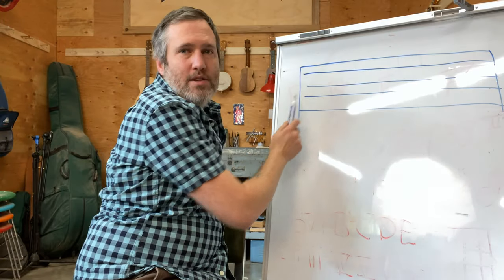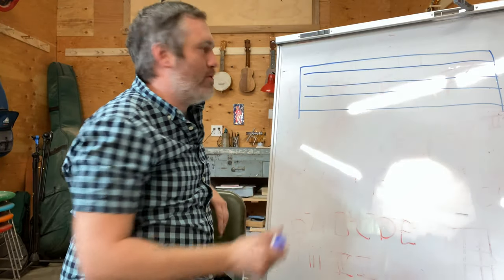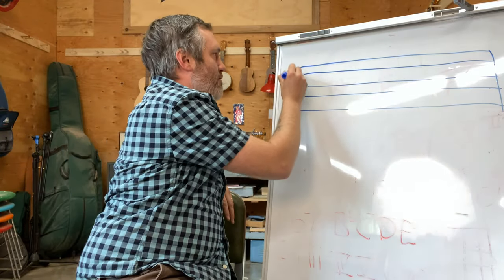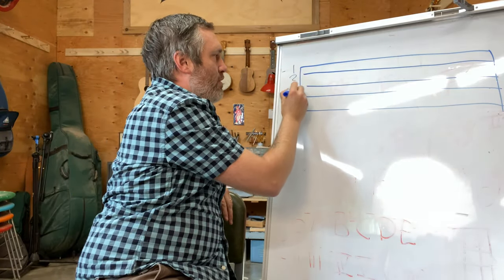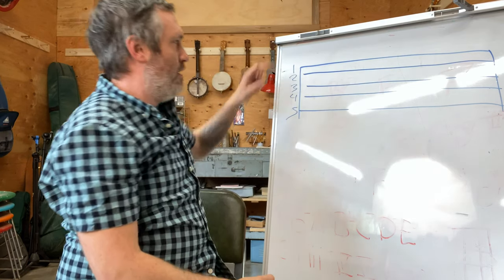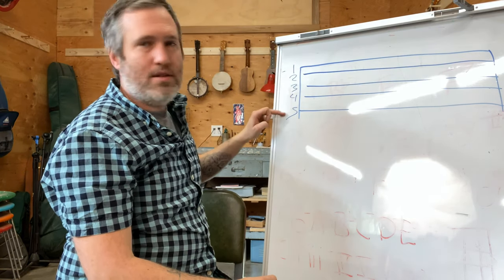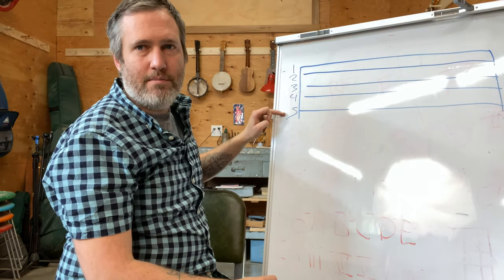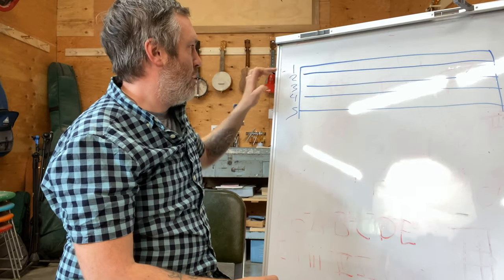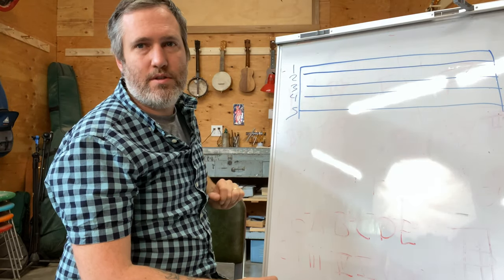We've got five lines on our staff, and each one represents one of your banjo strings. This is the first string, second string, third string, fourth string, fifth string. The fifth string is the one closest to the ground — that's the little tiny one by your face. First, second, third, fourth, fifth strings.